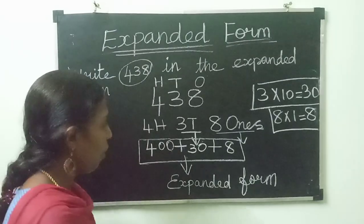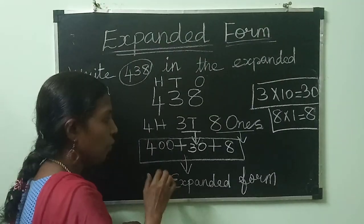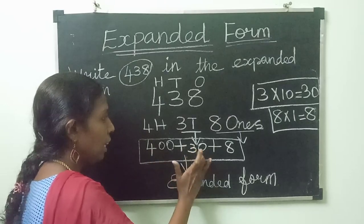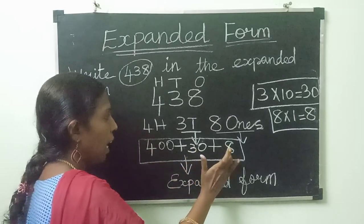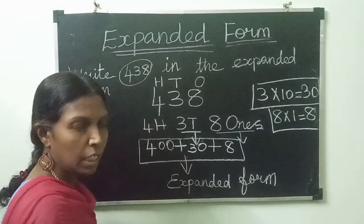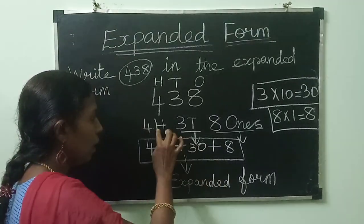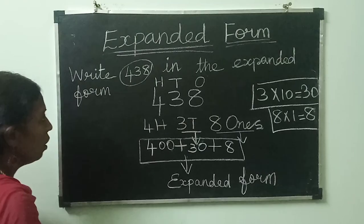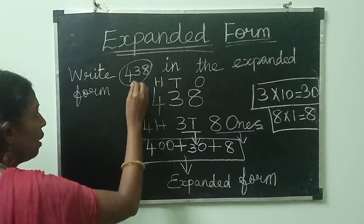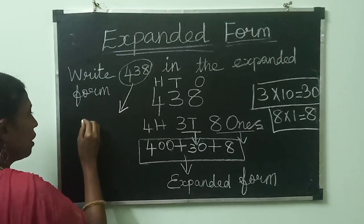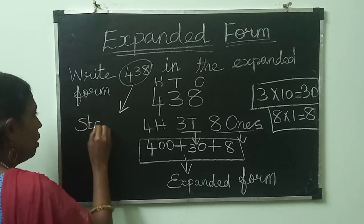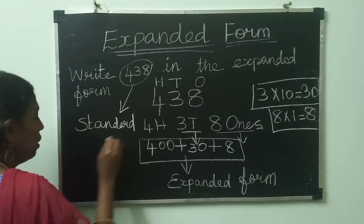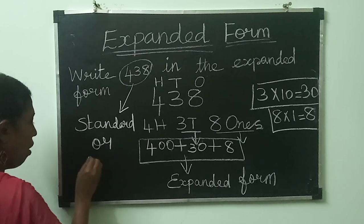Expanded form represents a number split into hundreds, tens, and ones. The original given number is in standard or short form, while the result we found is in expanded form.